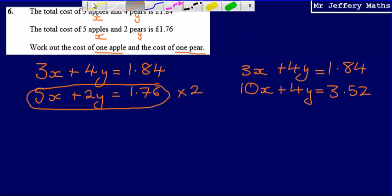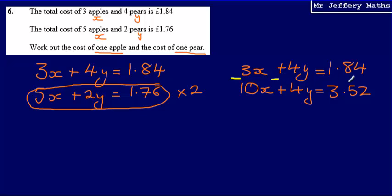Now by doing that, what it allows us to do is now I can just take these away from each other. So if I take away 3x, so if I do 3x minus 10x, that's going to give me negative 7x. If I do 4y minus positive 4y or 4y minus 4y, that eliminates the y's. And then all that I'm left with is £1.84 minus £3.52, which is going to give me negative £1.68.